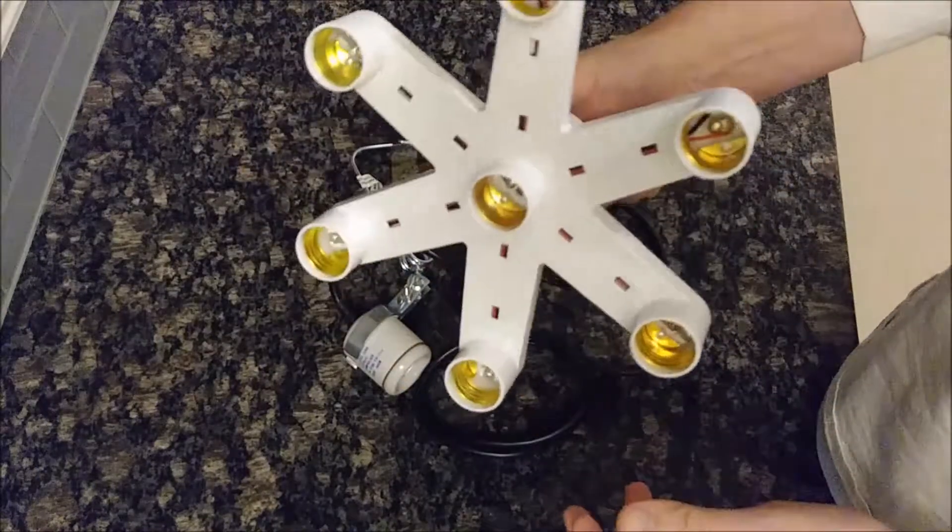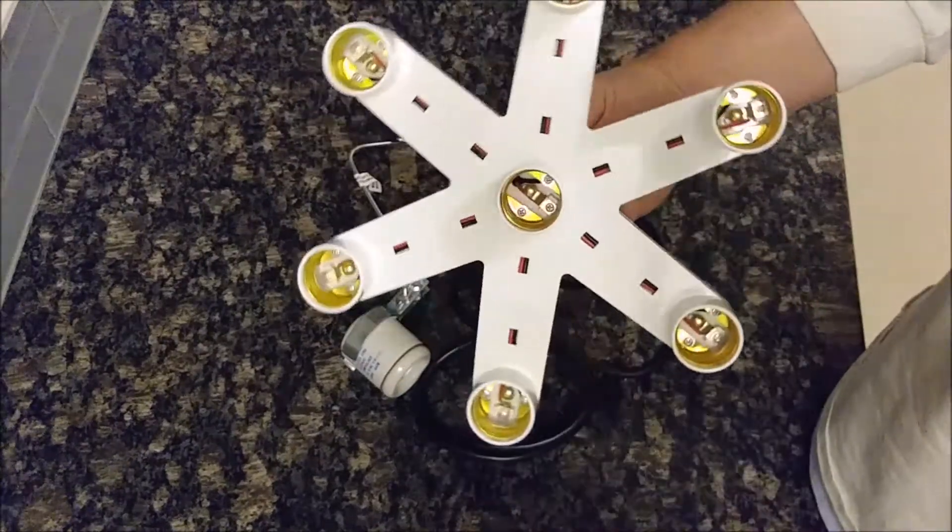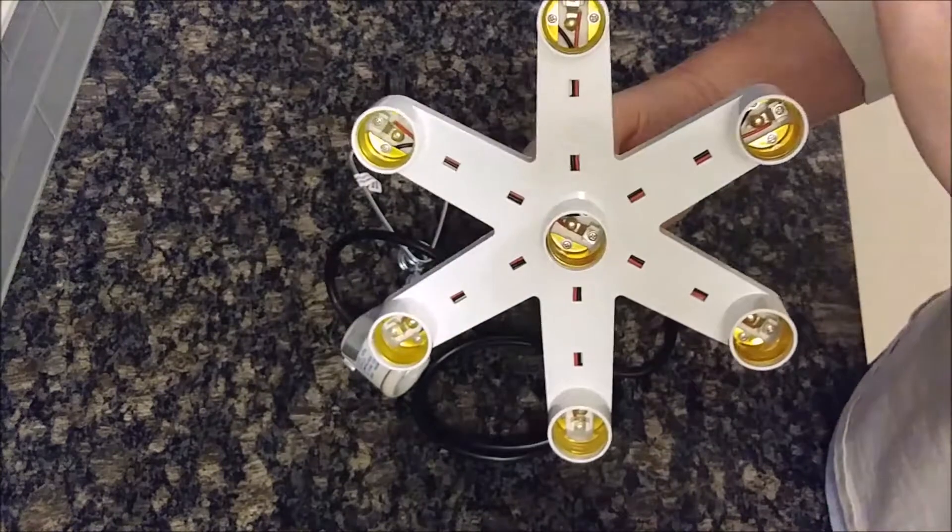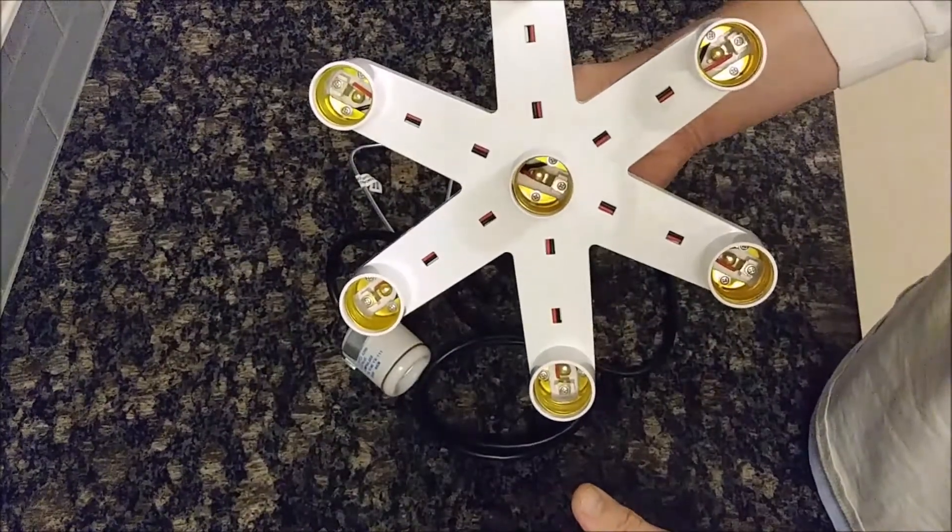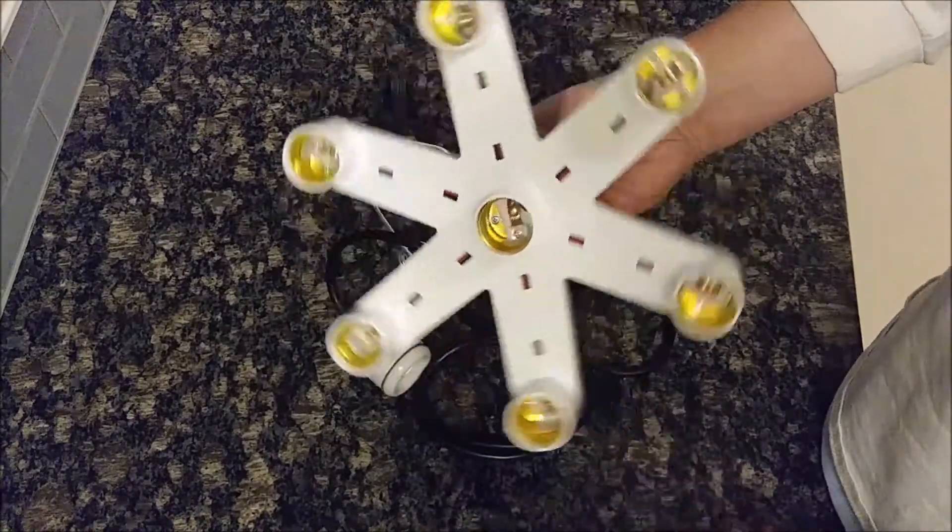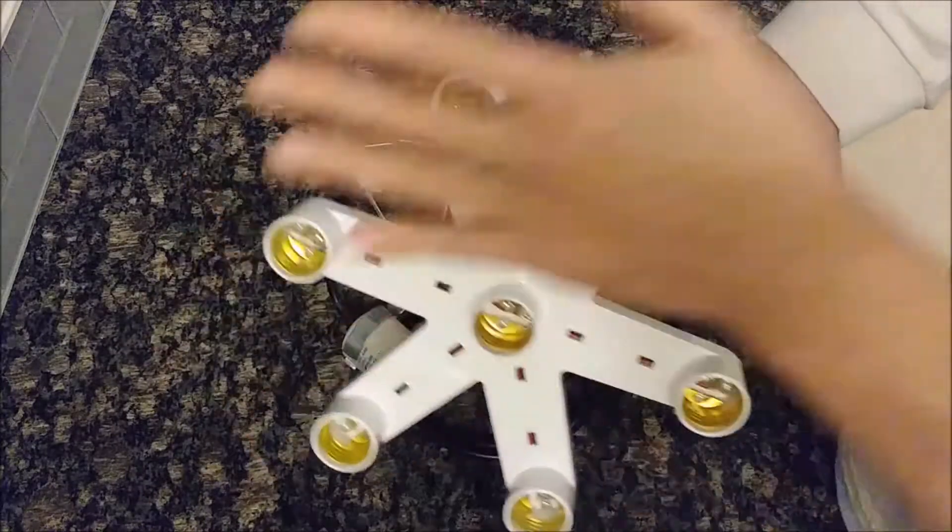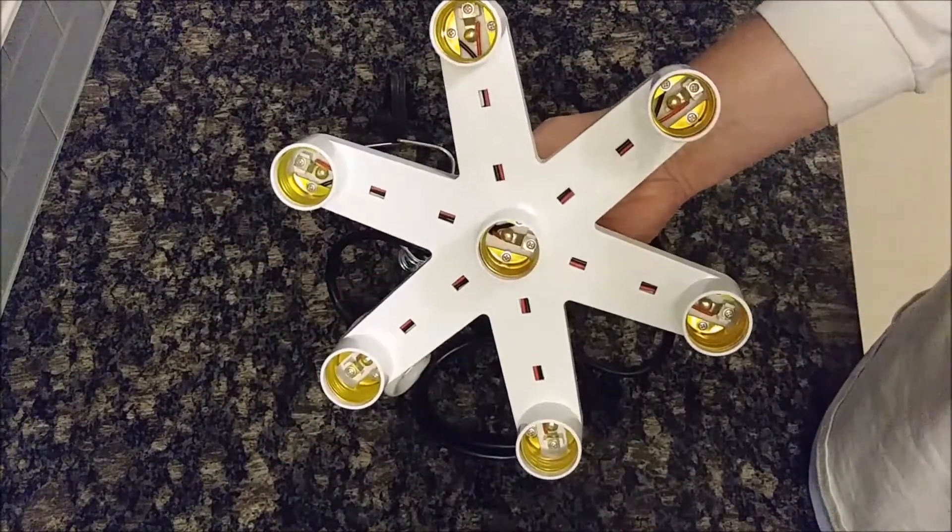If a bulb goes bad, then you just take it out and replace it. If you have those LED panels that you see on the market, they're great, it's going to cost you a little bit more money than this thing, but you could put individual light bulbs in there, LED bulbs in there.